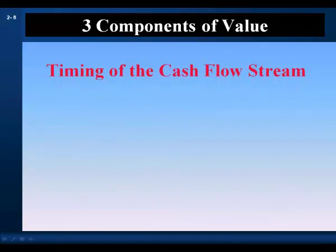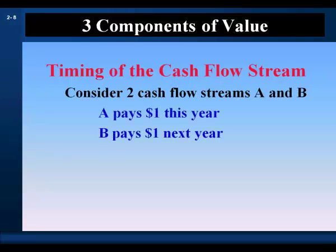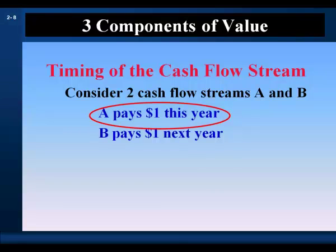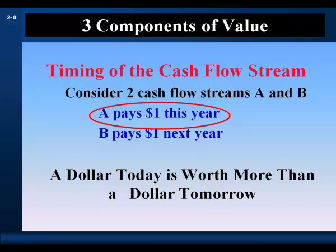The second component of value is the timing of the cash flow stream. Consider two cash flow streams, A and B. A pays $1 this year, B pays $1 next year. A rational person would choose A, everything else equal — we prefer an immediate payoff to a delayed payoff. We prefer to have it today rather than tomorrow, so money has time value, and $1 today is worth more than $1 tomorrow.